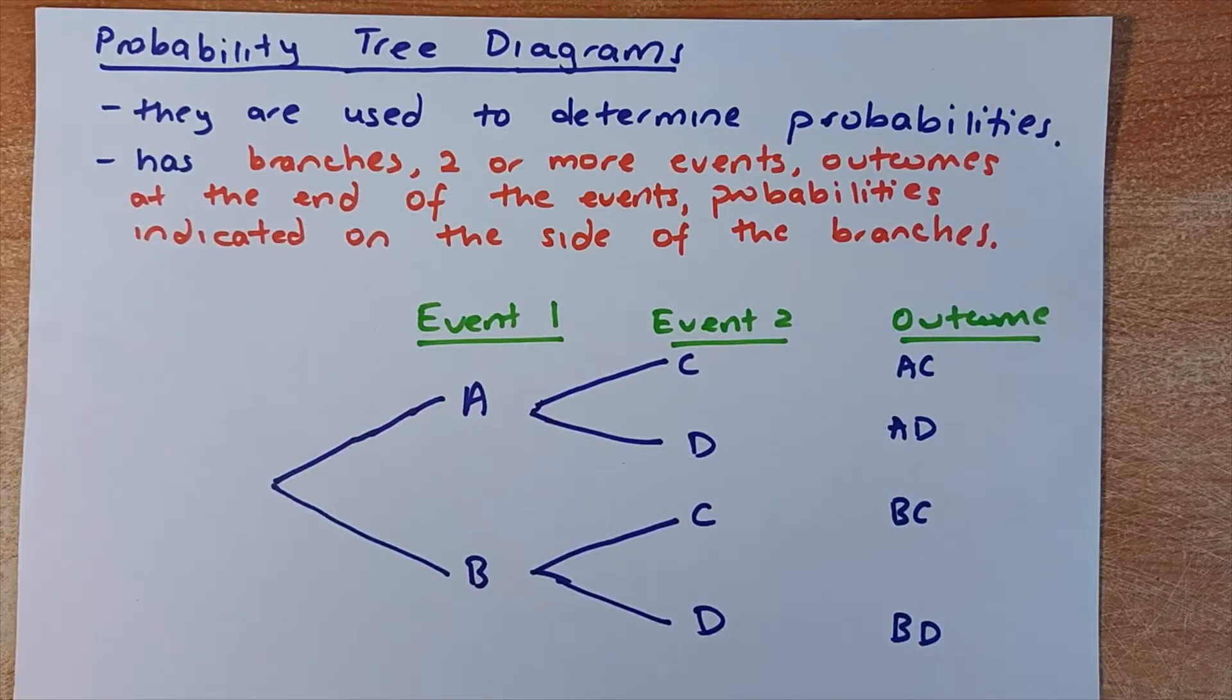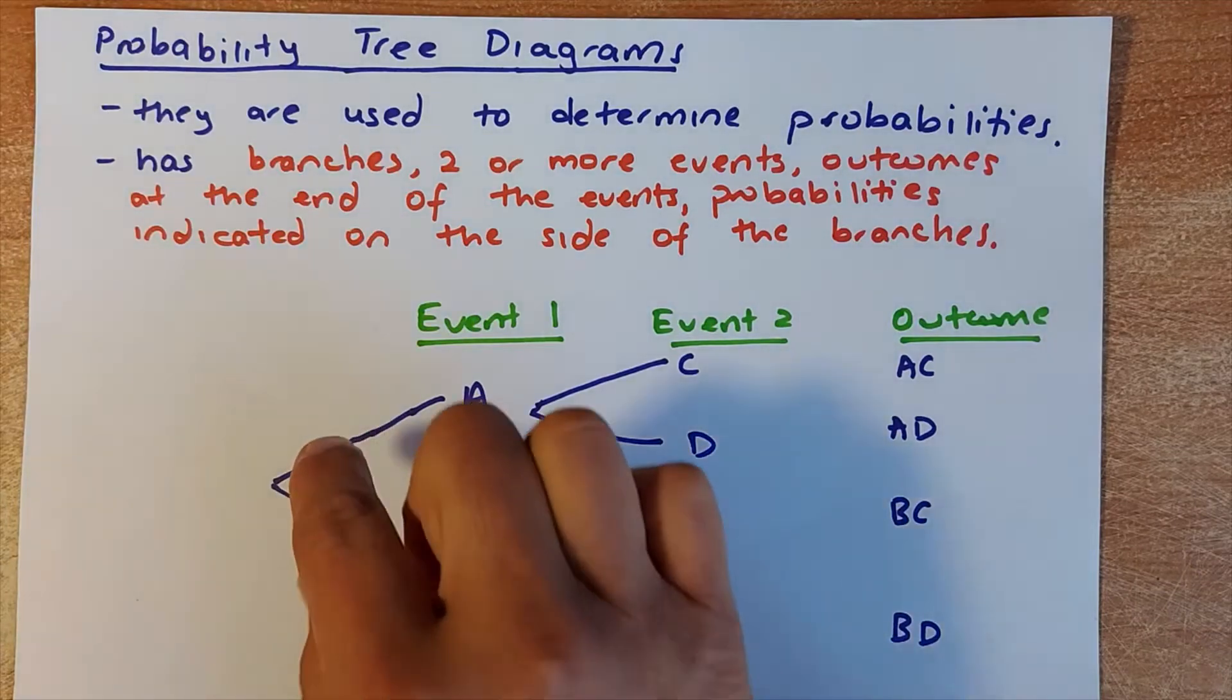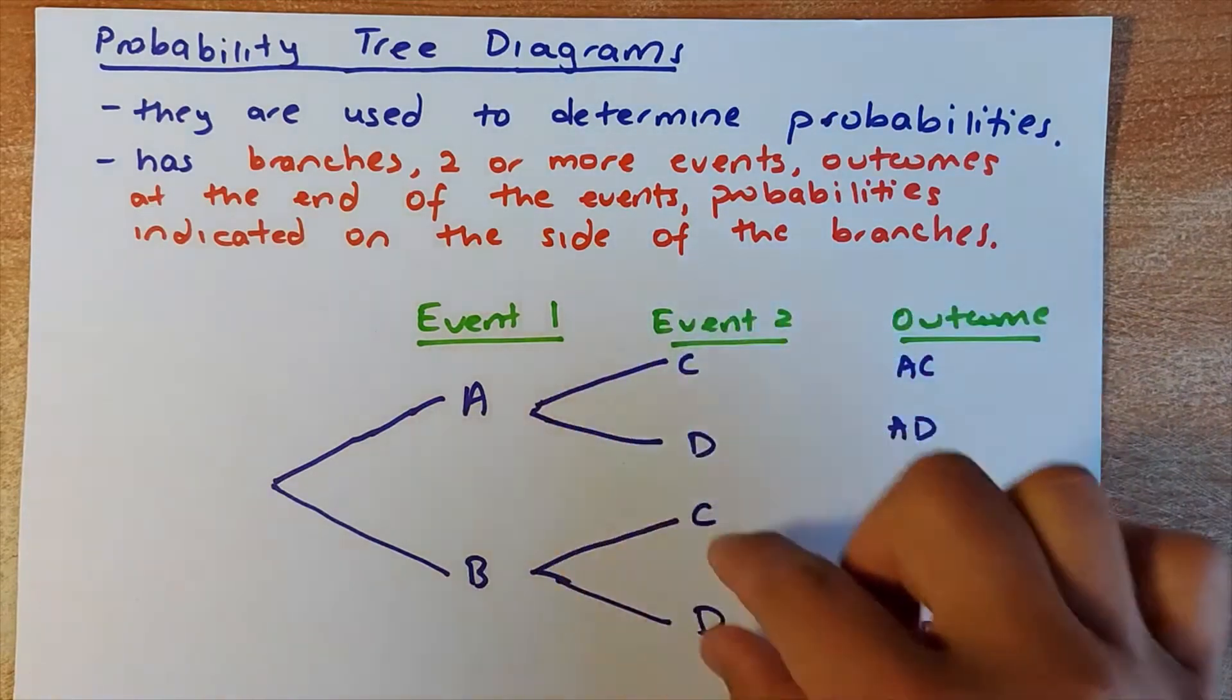It's one of the methods used to calculate probabilities in year 9, year 10, year 11, year 12 and even up to year 13. We shall look at the probability tree. So the probability tree has branches. These are the branches, these are all also branches.